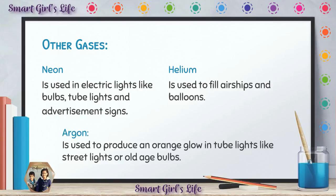Next we have the last gas, which is argon. Argon is used to produce an orange glow — an orange type of light in tube lights, street lights, or old-style bulbs. That is where argon gas is used.